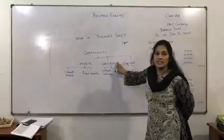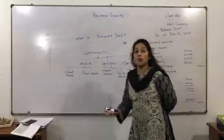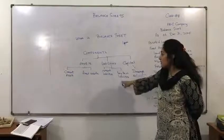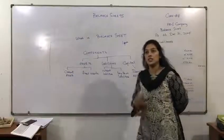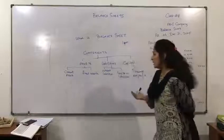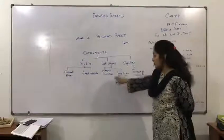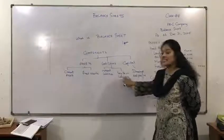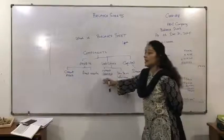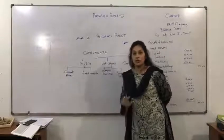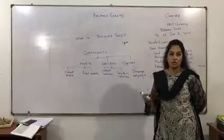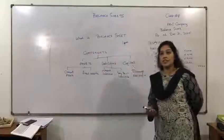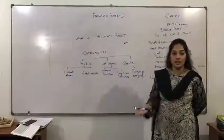The second component is liabilities. Liabilities are anything which we have to pay. Any business or organization will have liabilities — any business cannot run without liabilities. Liabilities are divided into two parts: current liabilities and long term liabilities. Current liabilities we have to pay within a period of time — that may be one or two years, not more than that. Long term liabilities have long term durations — that may be more than five years; you can pay after five or ten years.